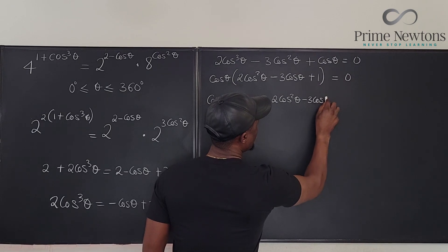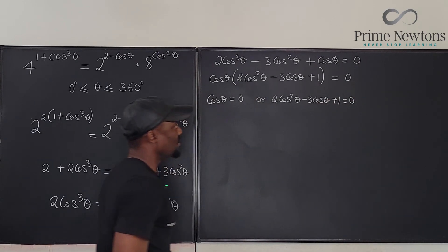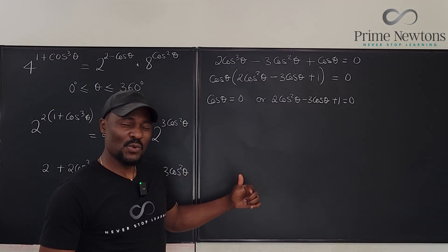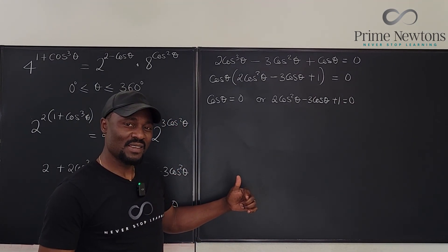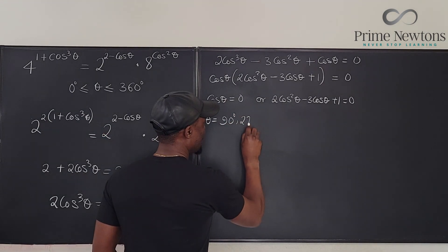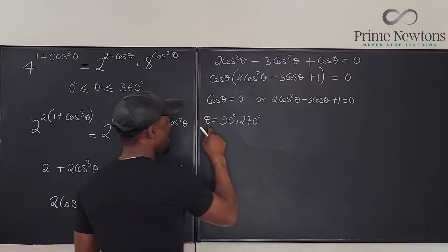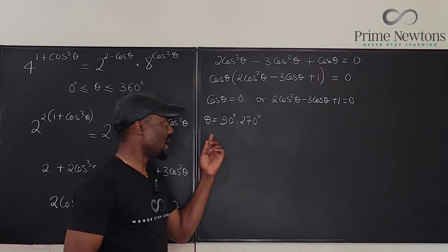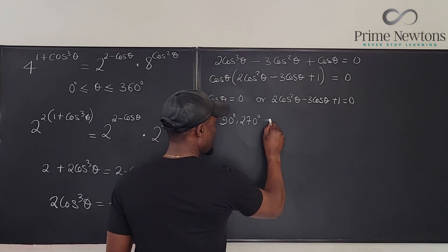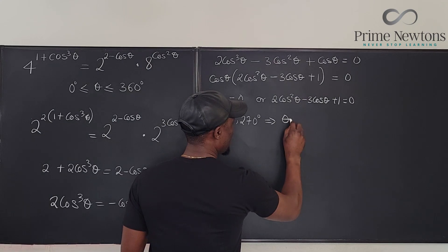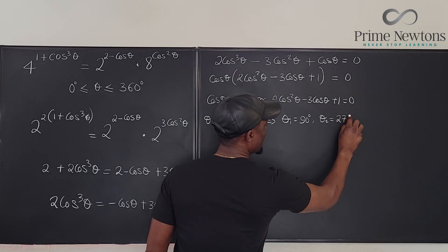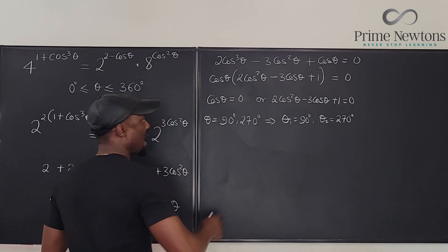So cosine θ = 0, or 2 cosine²θ minus 3 cosine θ plus 1 = 0. If cosine θ = 0, then θ must be 90° or 270°. So θ₁ = 90° and θ₂ = 270°. Now let's solve the remaining quadratic equation.